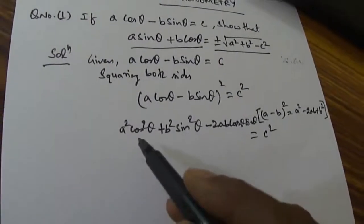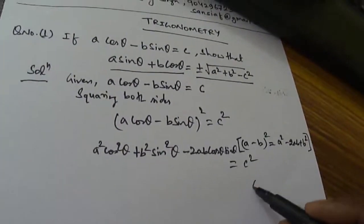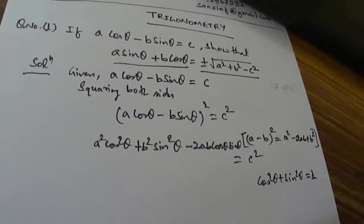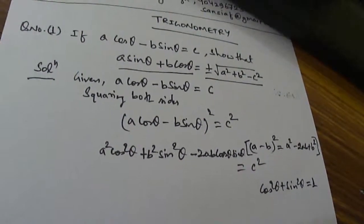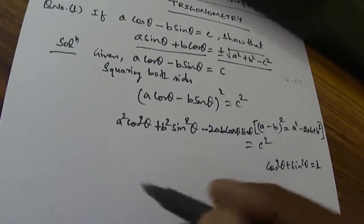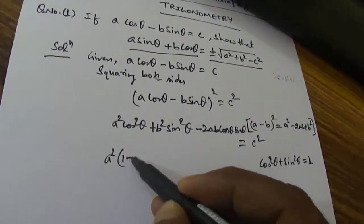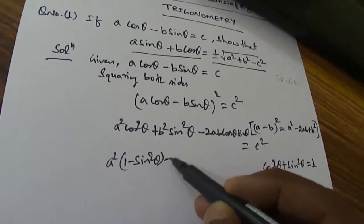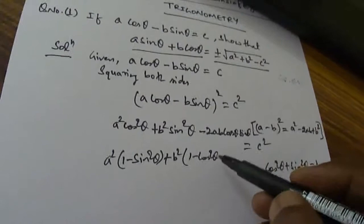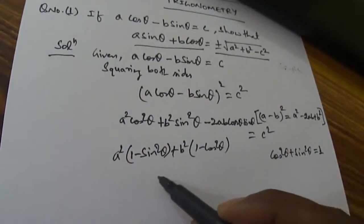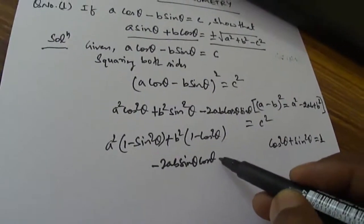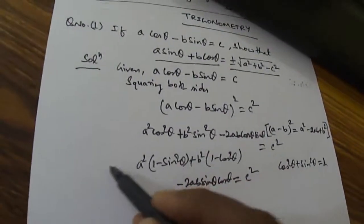Now what we will be doing? We already know the formula cos squared θ plus sin squared θ equals 1. So from that we can substitute the values. We will write for cos squared θ that is 1 minus sin squared θ, and for B squared sin squared θ we will be writing 1 minus cos squared θ. And then minus 2AB sin θ cos θ, and it is equal to C squared.